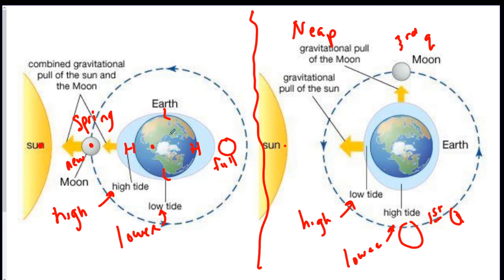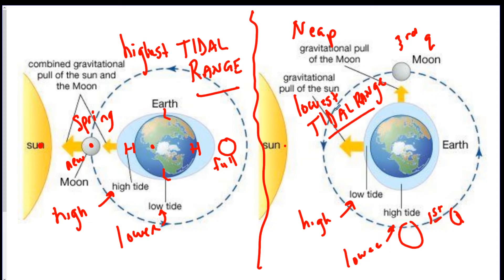Neap tides happen on first quarter and third quarter and cause high low tides and low high tides. Now, back to the spring tides. Since the high tides are higher and the low tides are lower, this is going to give you your highest or greatest tidal range. And neap would be your lowest tidal range because the water level is not really adjusting that much.